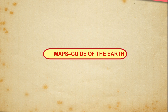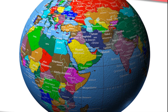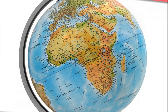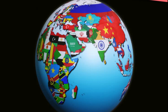A globe is a model of the Earth with its surface. It helps us to locate places on the Earth. But it has some disadvantages. A globe cannot show the whole world at a time. It is difficult to carry it because of its shape. It cannot show countries and cities of the world in great detail. To overcome these disadvantages, we use maps.